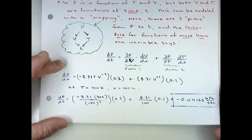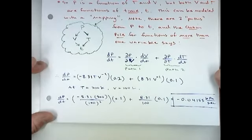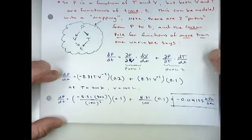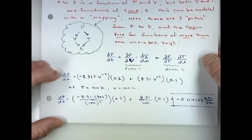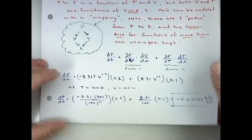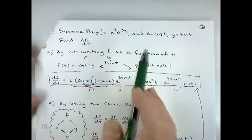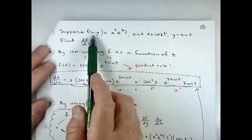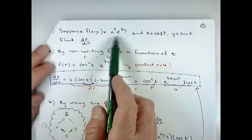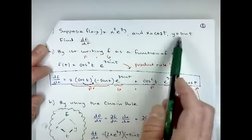Now that we've seen an application problem, let's work with functions without any context. We have some function f that's a function of x and y: x² · e^(3y), and we know that x = cos(t) and y = sin(t). One possible context could be a predator-prey model we'll study later — populations can be cyclical, oscillating like sine or cosine functions. Suppose we want to find df/dt — how is this function changing with respect to time?